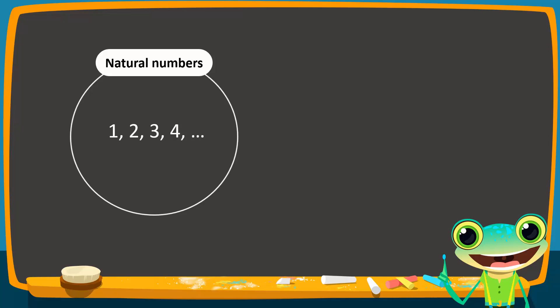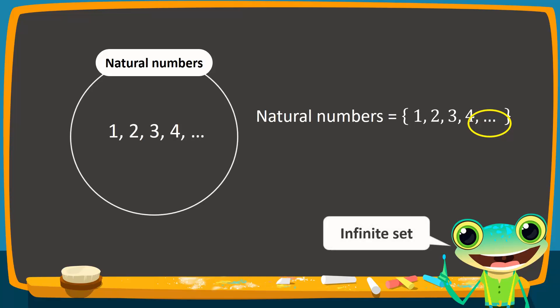In tabular form, we write this set as... Observe that the number of elements in this set cannot be counted. Here, the dotted lines show that the set has infinite elements. Therefore, this set is an infinite set.